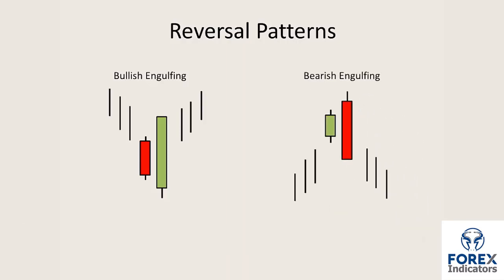The bearish engulfing candle at the higher levels on the market is where the market pushes up, prints the green candle, then pushes up higher again but the market rejects. Sellers come in and push the market back down again. The open and close of the engulfing candle is above and below the open and close of the prior candle.